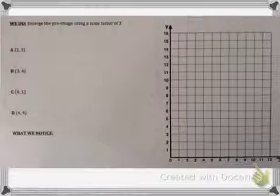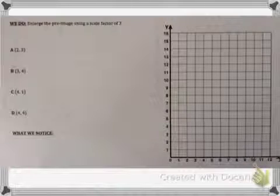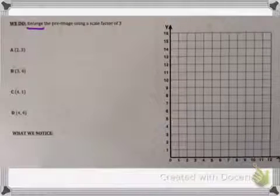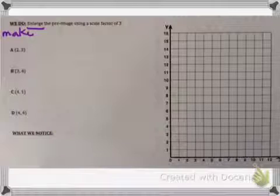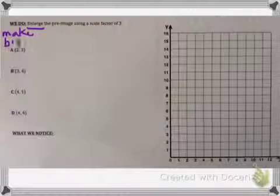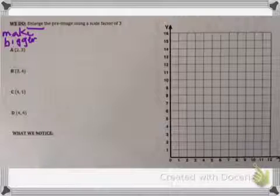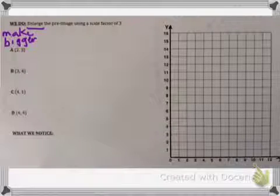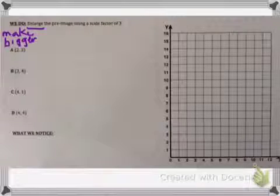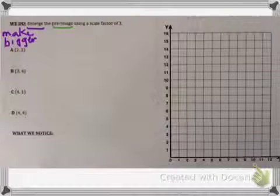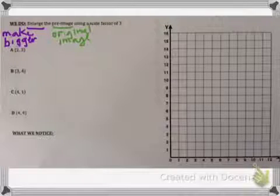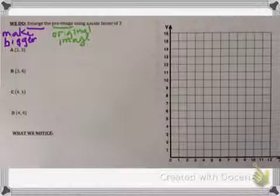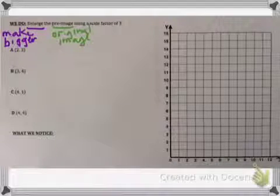So let's do the we do: enlarge the pre-image using a scale factor of 3. Enlarge means to make bigger — underline enlarge and copy down that quick note. The pre-image is the original image — underline pre-image and jot down 'original image.' These are important things we should know.